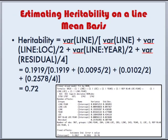We can now use these variance components to estimate heritability on a line mean basis. For our experiment, heritability equals the variance due to line, divided by: the variance due to line, plus the variance due to line-by-location divided by 2 (as we have two locations), plus the variance of the line-by-year interaction divided by 2 (two years), plus the residual variance divided by 4 — that comes from multiplying 2 by 2. Plugging in our values from the variance components table, for degrees BRICS we get a heritability of 0.72.